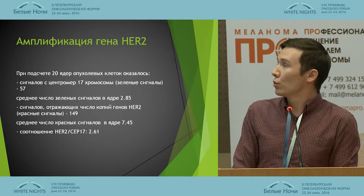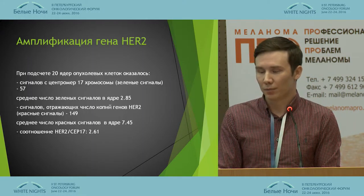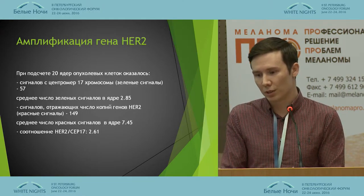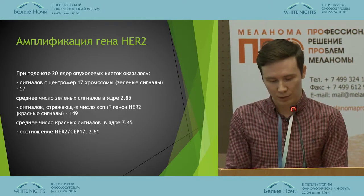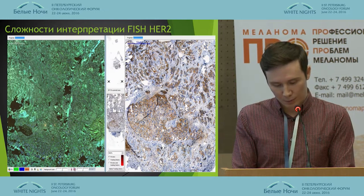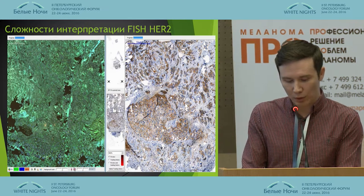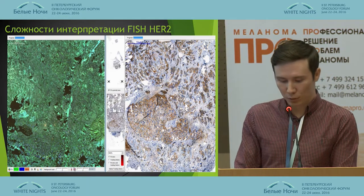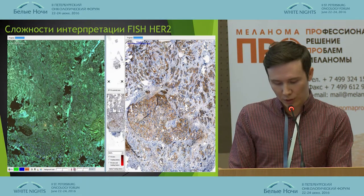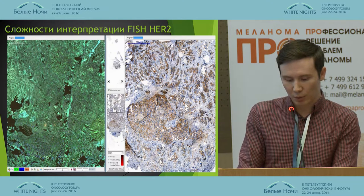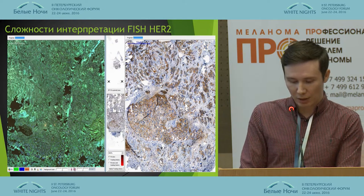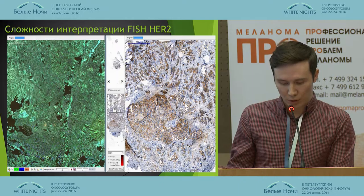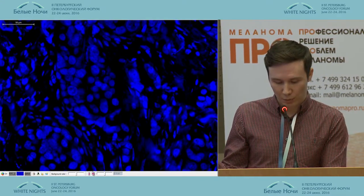We calculate the number of signals with the copies of HER2 and the general picture looks like this. In this case we have amplification of the HER2 gene with 20 tumor cells, with six red signals and a ratio of 2.61. As already mentioned, the analysis should be performed in the invasive carcinoma section. In a fluorescent scan it is difficult to view the carcinoma in situ, and that is the advantage of the digital scanning microscope, as it helps us to calculate correctly.